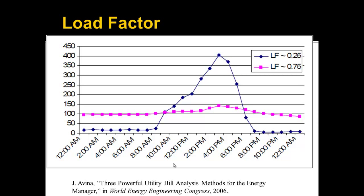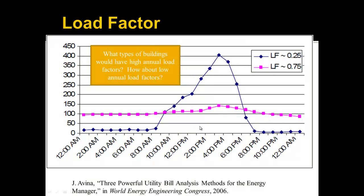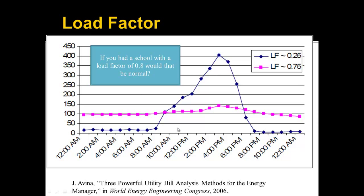So we covered EUI, ECI, and the ENERGY STAR score. Another thing you can do to compare your building's energy performance is the load factor — we talked about this a little bit in a previous class, but let's review. The types of buildings that have high annual load factors are very flat — that would be like a 24/7 convenience store, things that generally don't have a big peak. Low annual load factors are very peaky — something like a convention center that's only filled for a couple hours or days of the year. For a school to have a load factor of 0.8 would not be normal, because that means their consumption is rather flat and they're not really turning off their equipment at night.